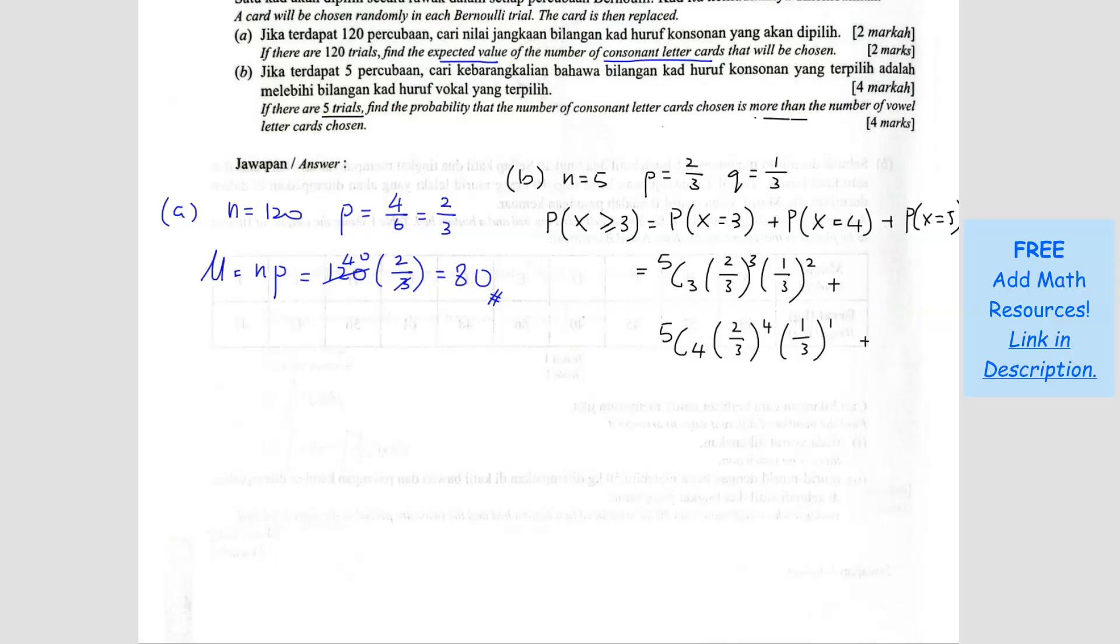X equals to 5. So 5C5, 2 over 3, power 5. And 1 over 3, power 0.